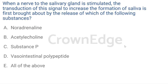Vagisha says B, Jaydev says E, Ritu says B. Jaydev wins this one again — it is all of the above. Saliva secretion is stimulated by both sympathetic and parasympathetic sources. Noradrenaline is a sympathetic substance, while acetylcholine, substance P, and vasoactive intestinal polypeptide all come from parasympathetic sources.